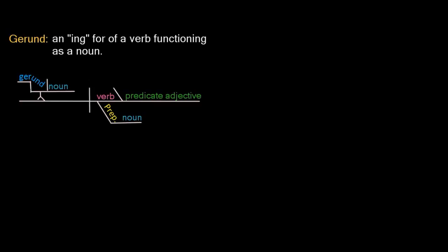Gerunds and infinitives are fun and different in that you have to build these little platforms for them. In this case, we're going to have a gerund that's functioning as a noun, and we build a little podium, and then we put a little staircase on top of that, and we have our gerund falling down the staircase. In many examples, like the one we're going to do, the gerund can have an object.